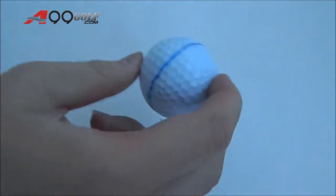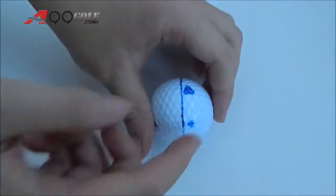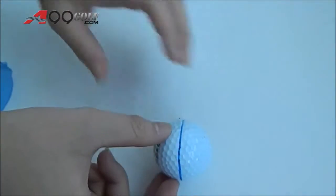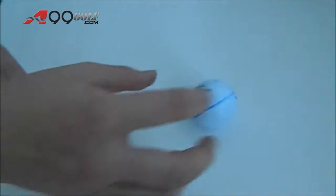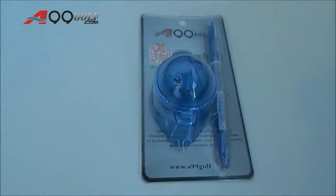This is a ball with already drawn marks and by drawing the straight lines, you can practice your putting skill by checking whether the ball is rolling straight or not.